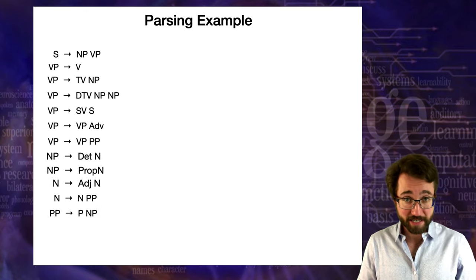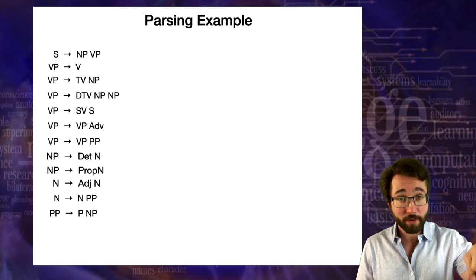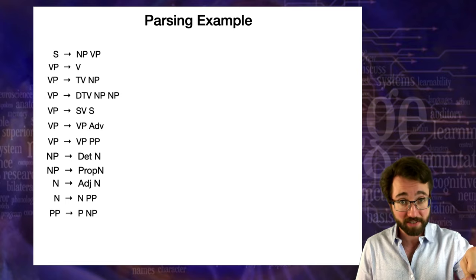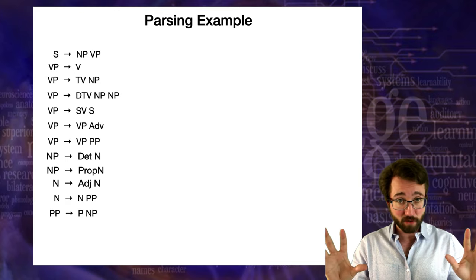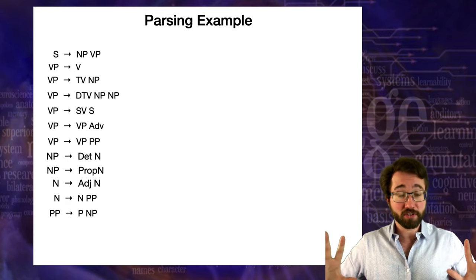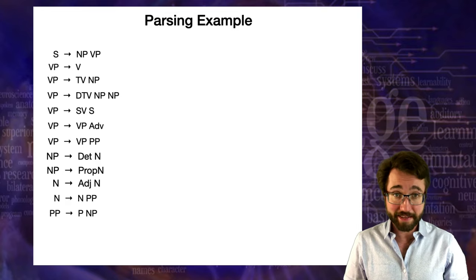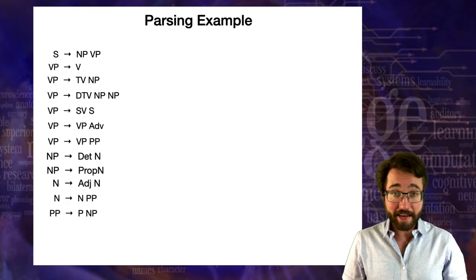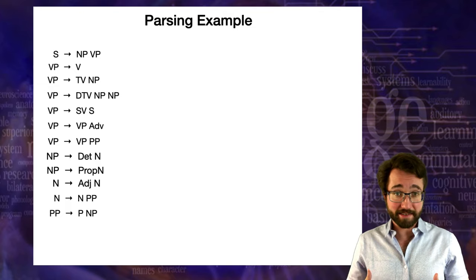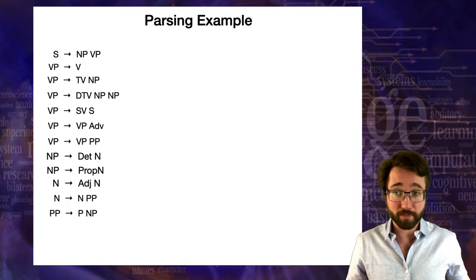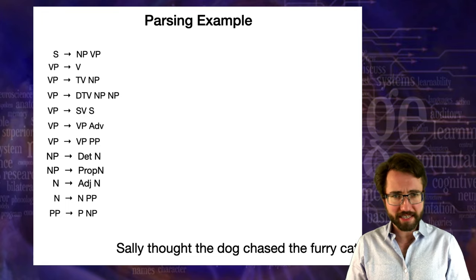That's generation — turning the crank forward. Now we're going to do parsing, which is turning the crank backwards. Starting with a sentence, a list of words, you want to build the tree up so that you have S on top at the end. Parsing tells you how you would have generated this sentence if you generated it using the rules. Here's an example: we start with the sentence 'Sally thought the dog chased the furry cat.'